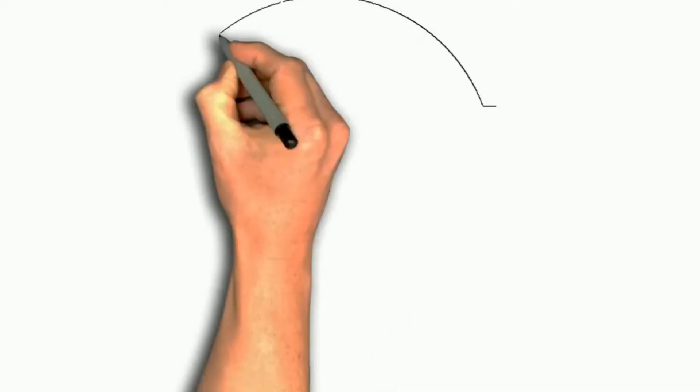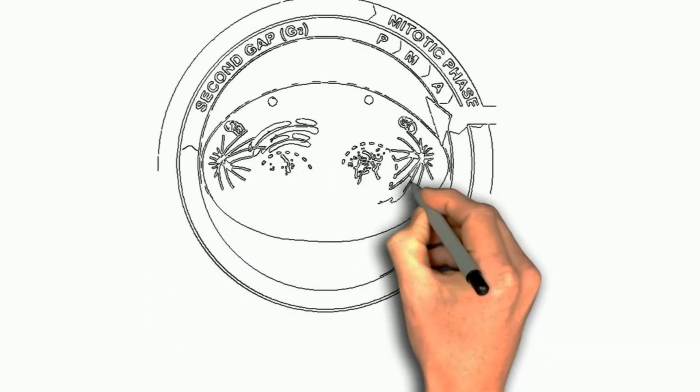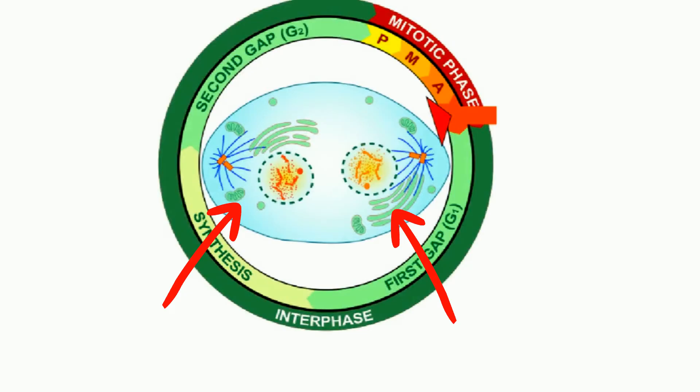During telophase, the newly separated daughter chromosomes get their own individual nuclear membranes, an identical set of chromosomes.